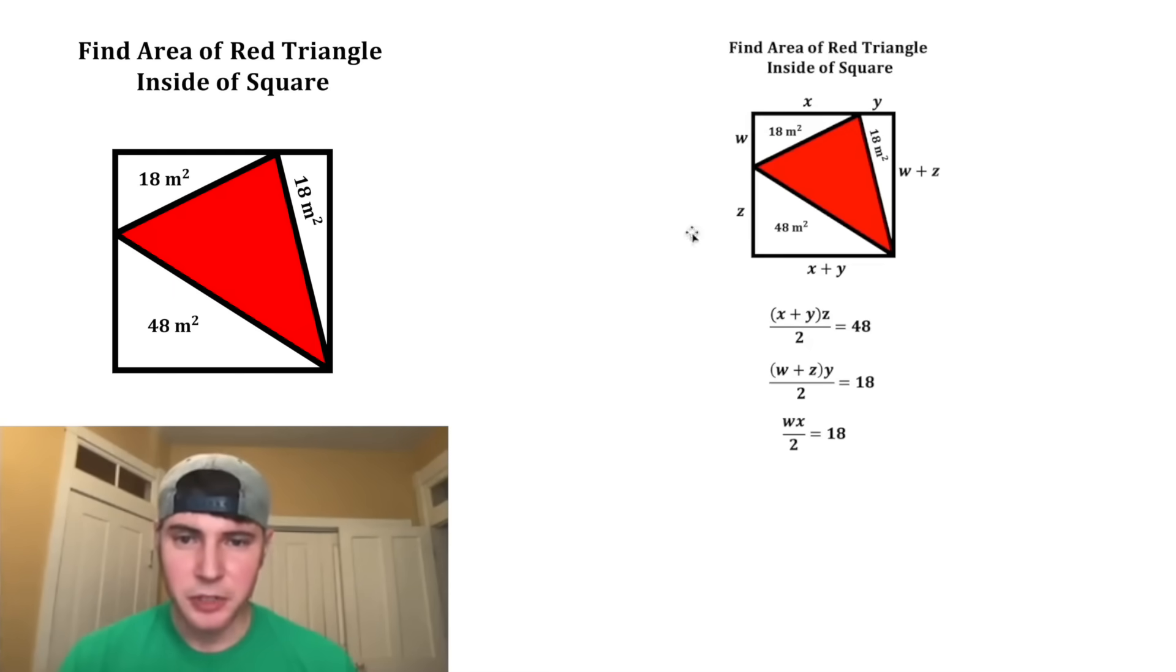And last, we have this white triangle up here, which is going to be w times x divided by 2 equals 18. And then we have one more equation. Since we know this thing is a square, we know these two sides are equal, so we can set w plus z equal to x plus y.